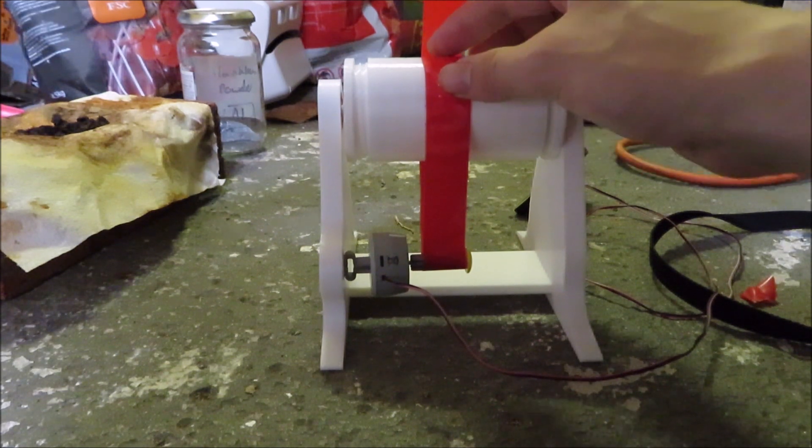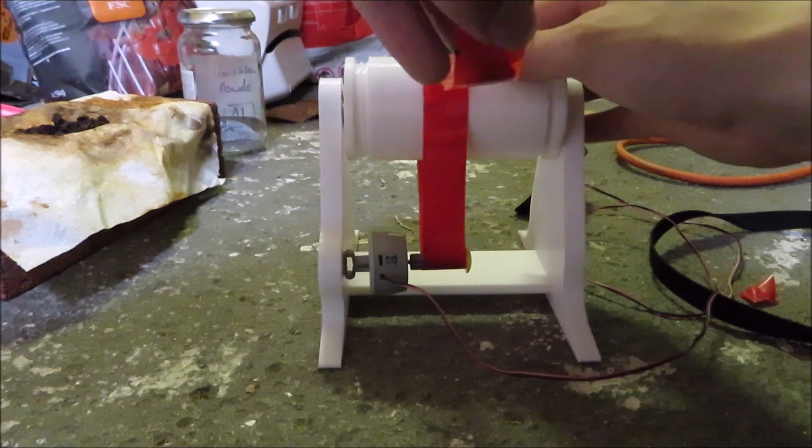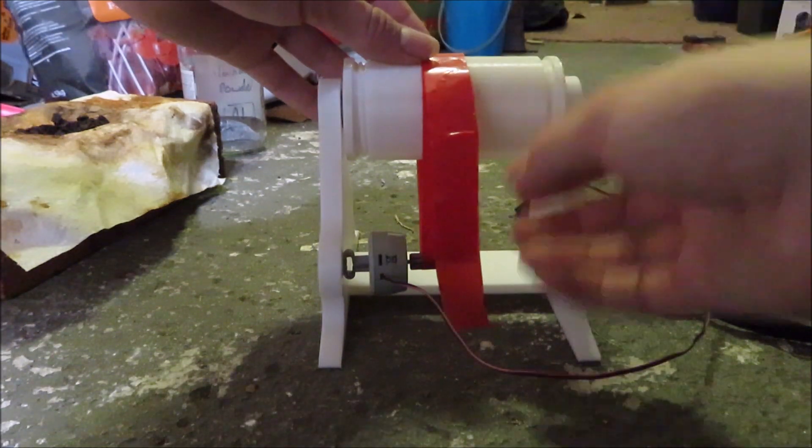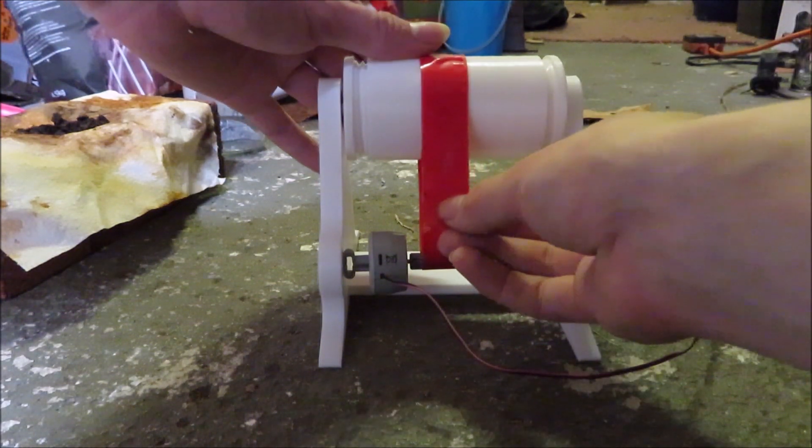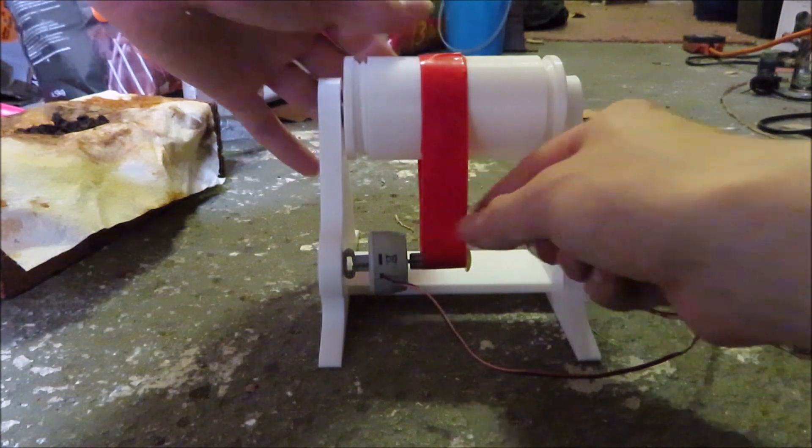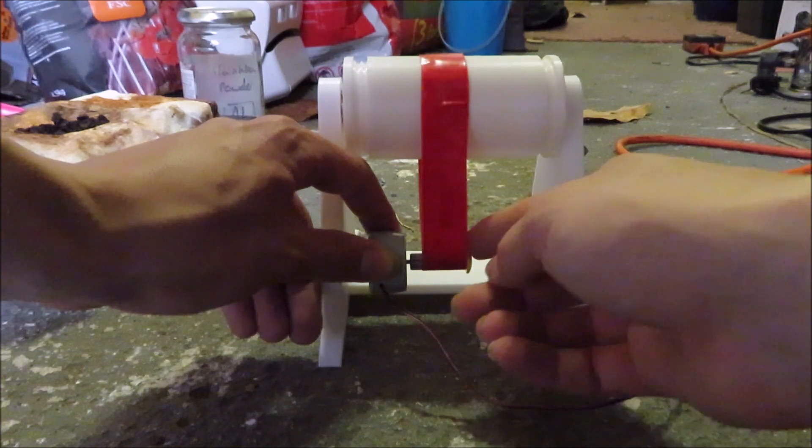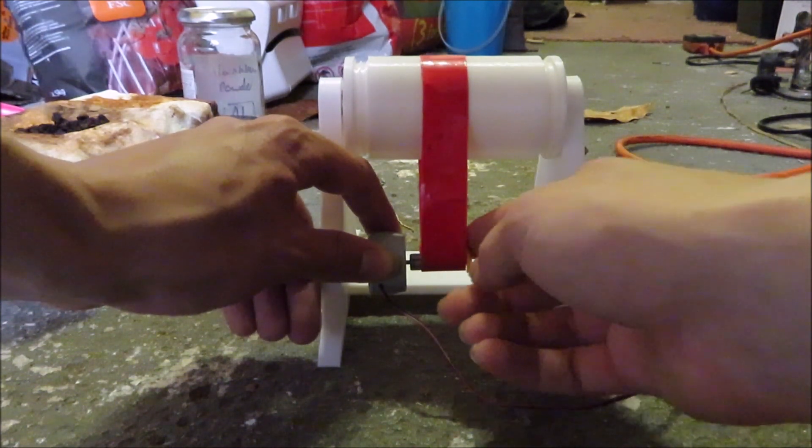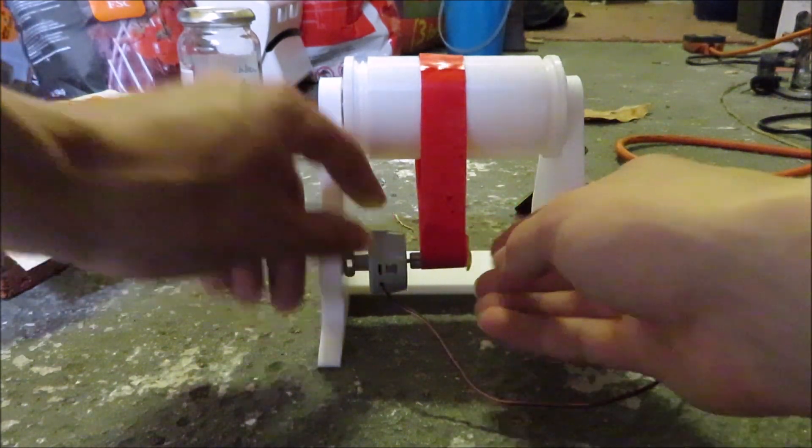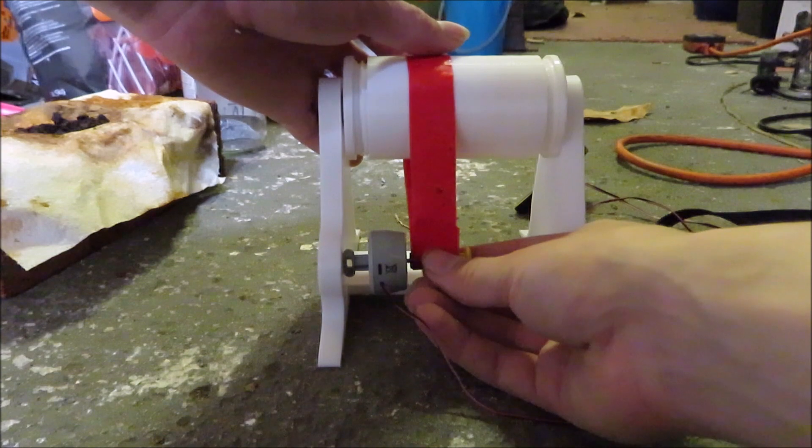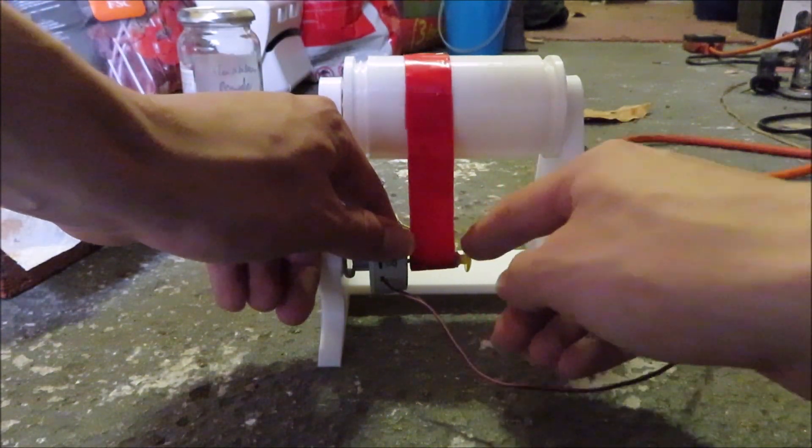And then the second bit can go on to here. So when this motor turns, it turns the mill with it. Just adjust the belt slightly. You don't want the belt too tight. You just want it tight enough that it turns the main section.